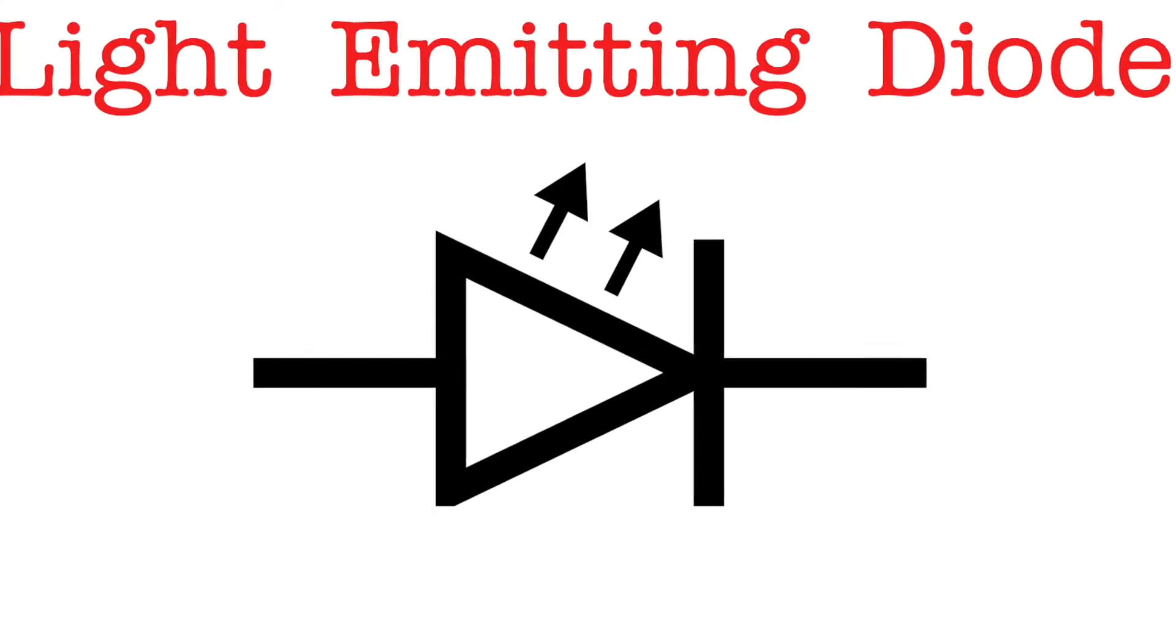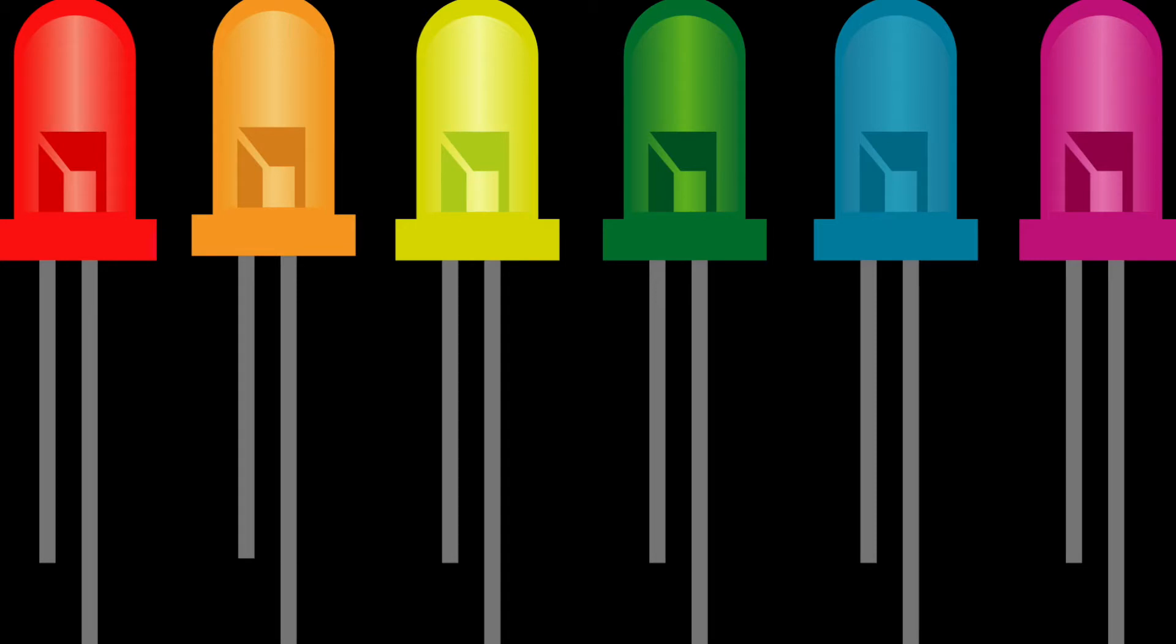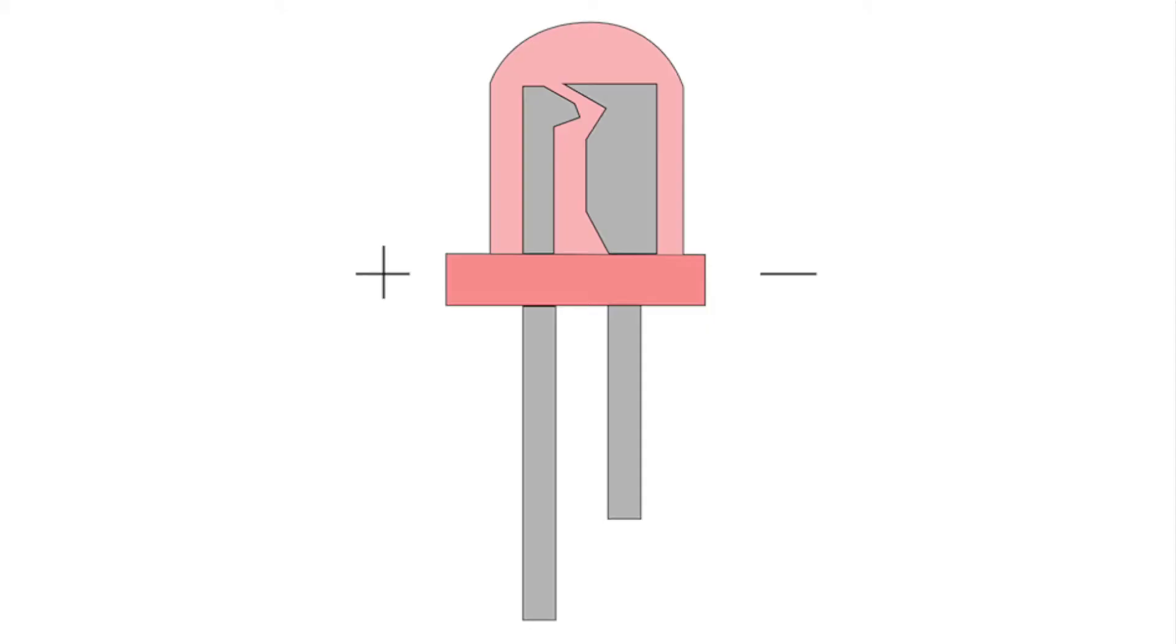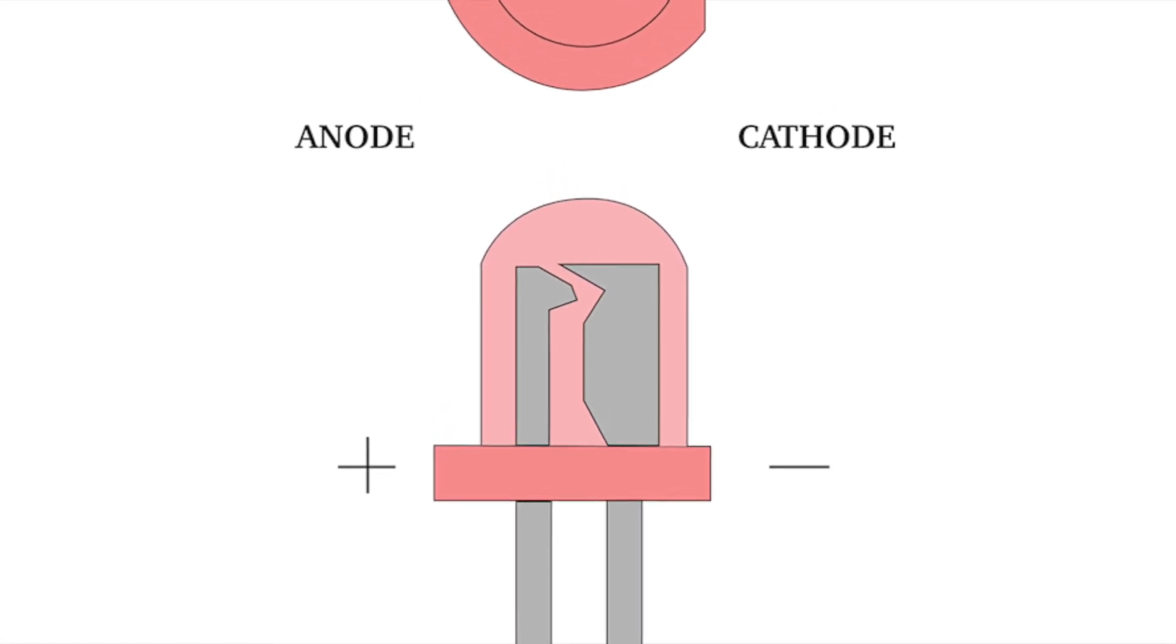Light emitting diode is a two-lead semiconductor light source. It is a PN junction diode that emits light when activated. As the name implies, it is a diode that emits visible light when it is energized.